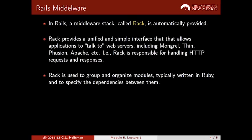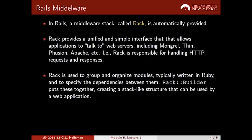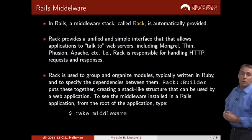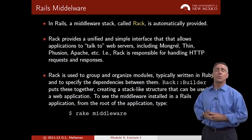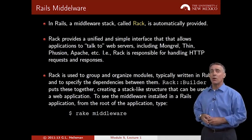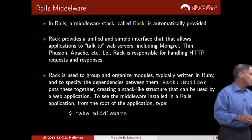Rack is organized to provide a stack of services in the middleware. This stack of services is typically written in Ruby, and it pieces them together so that one level of this stack is able to talk to the middleware services above and below it. If you'd like to see what middleware is provided for you, just go to your console and type 'rack middleware', and you'll see a listing of all the middleware that comes pre-configured for Ruby on Rails.